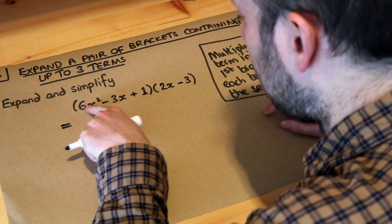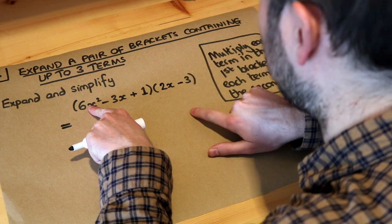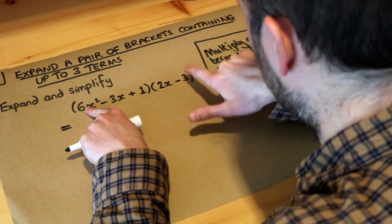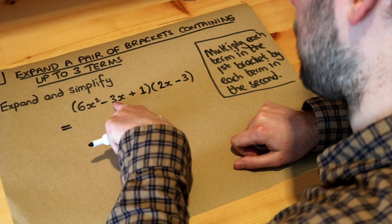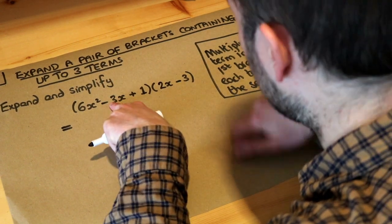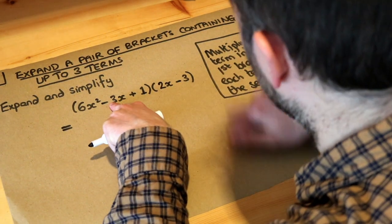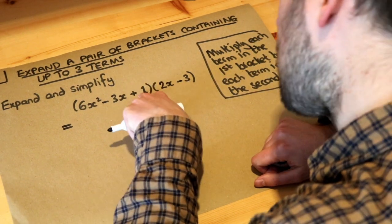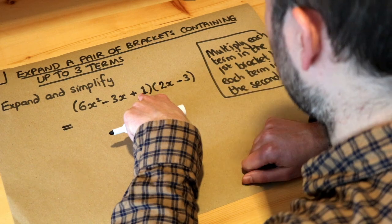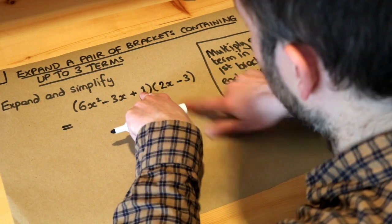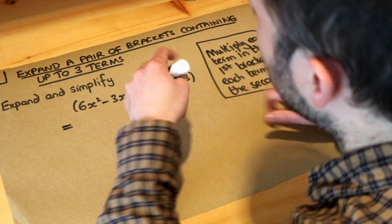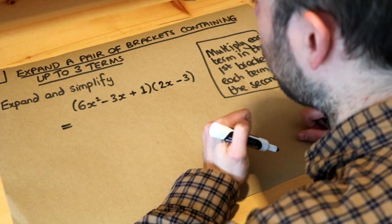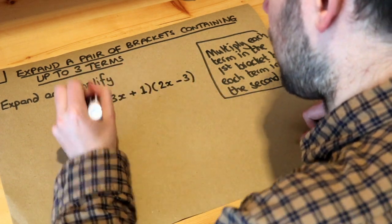We're going to do each thing in this bracket times each thing in this one. I'm going to do the first thing here times each of the things in the second bracket — first times first, first times second. Then the second thing times each thing in the second bracket — second times first, second times second. And the third thing times each of the things in this bracket — third times first, third times second. The order doesn't actually matter, but it makes sense to be systematic.